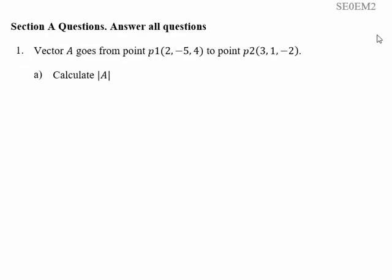To find the length of the vector, we subtract point P1 from point P2. So we're going to have 3 minus 2, 1 minus minus 5, and minus 2 minus 4. And that gives us 1, 6, minus 6.